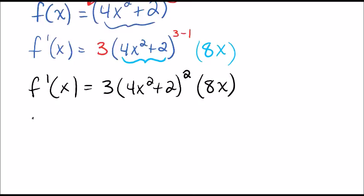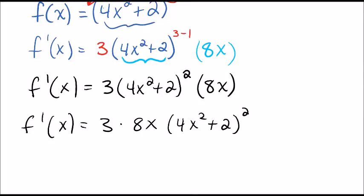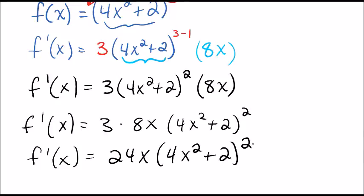And then I'll probably pull that 8x in front there. So it becomes 3 times 8x times the 4x squared plus 2 squared, which would then give us that this is 24x times 4x squared plus 2 to the second.